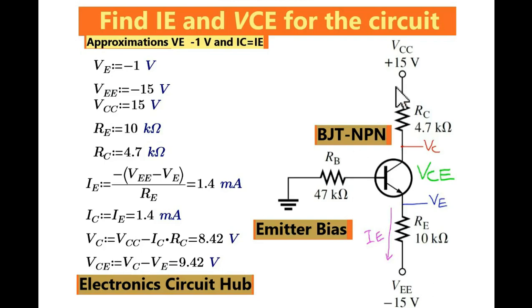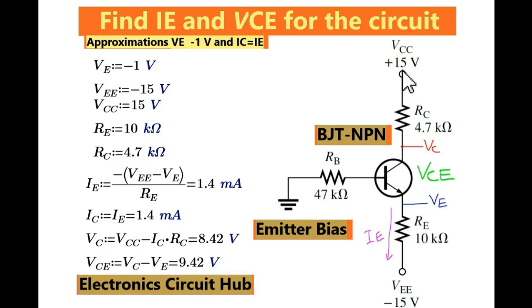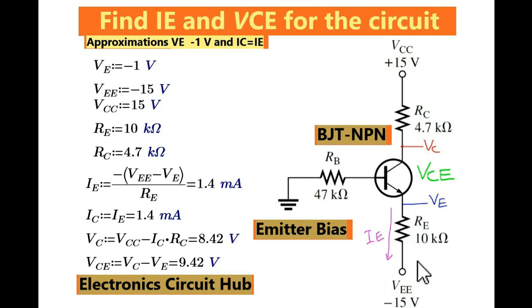You can see here the base of this NPN transistor is connected to one resistance RB, then it is grounded. Your collector is connected via RC collector resistance and 15 volt VCC. Your emitter is connected to VE, that is minus 15 volt, and you have resistance RE. Since the emitter is connected to the 15 volt supply, that is why it is called emitter biased configuration.